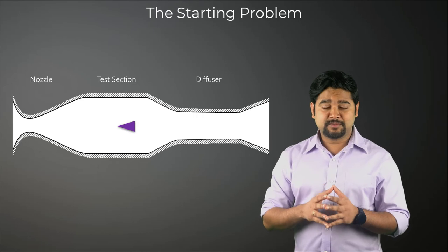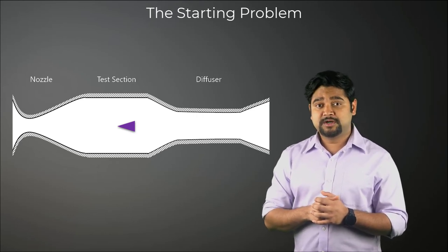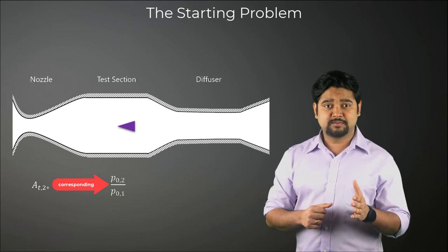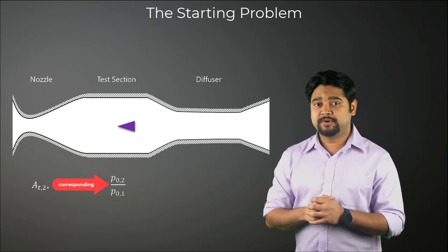This value is given by AT2 star corresponding to the total pressure ratio across a normal shock at the test section Mach number, P02 by P01.